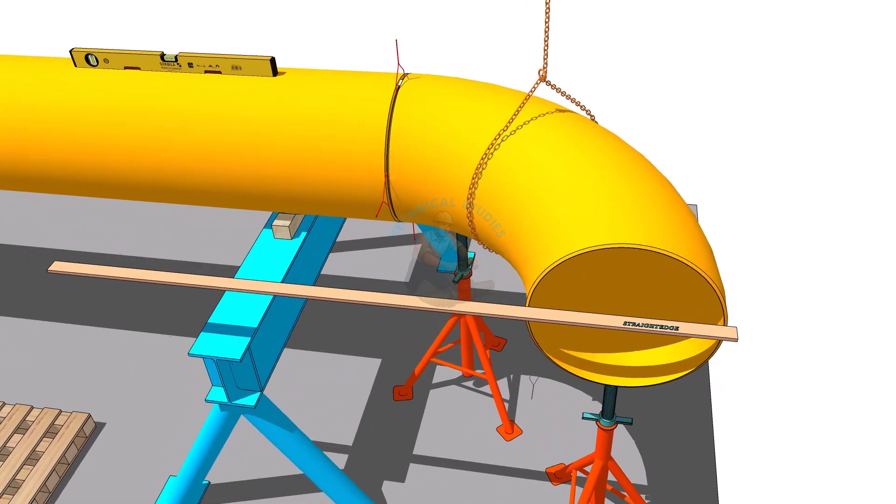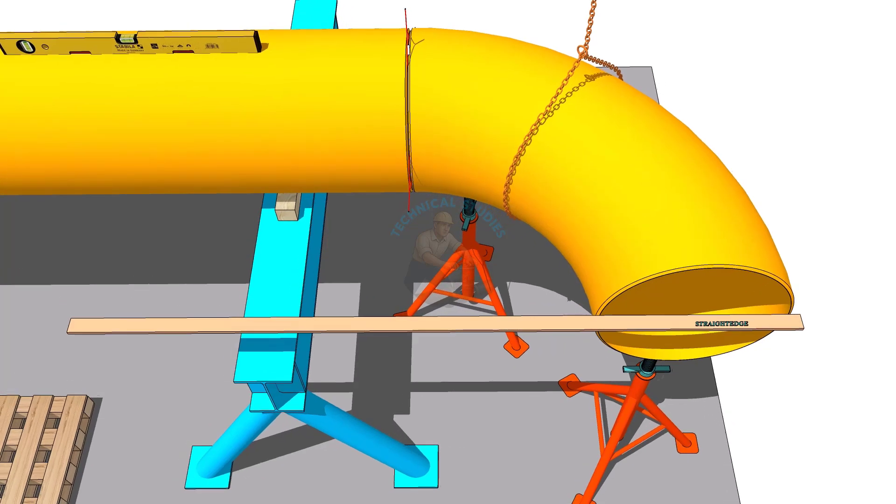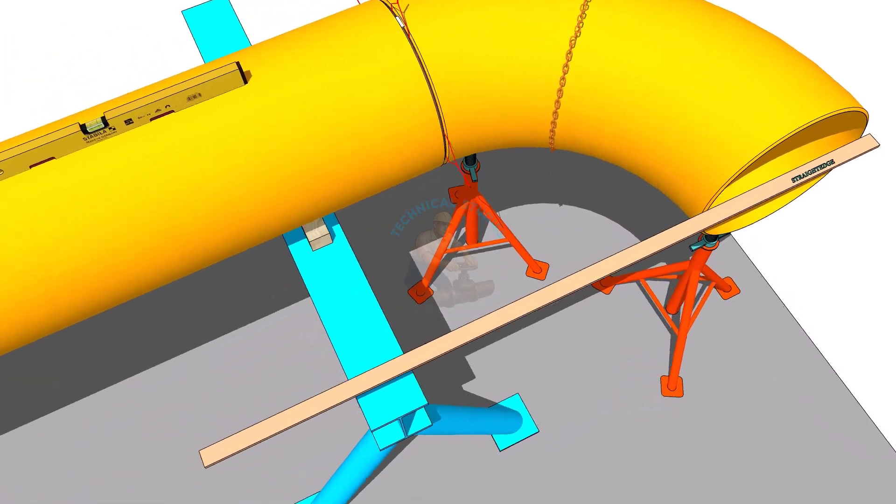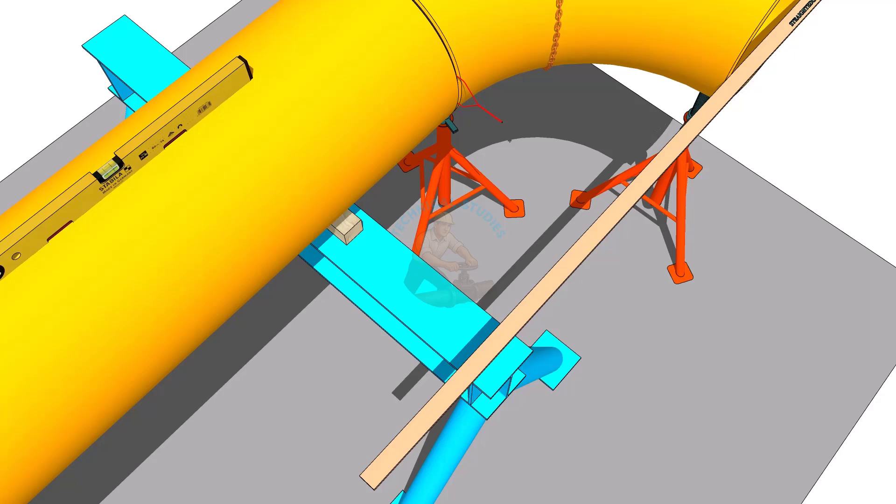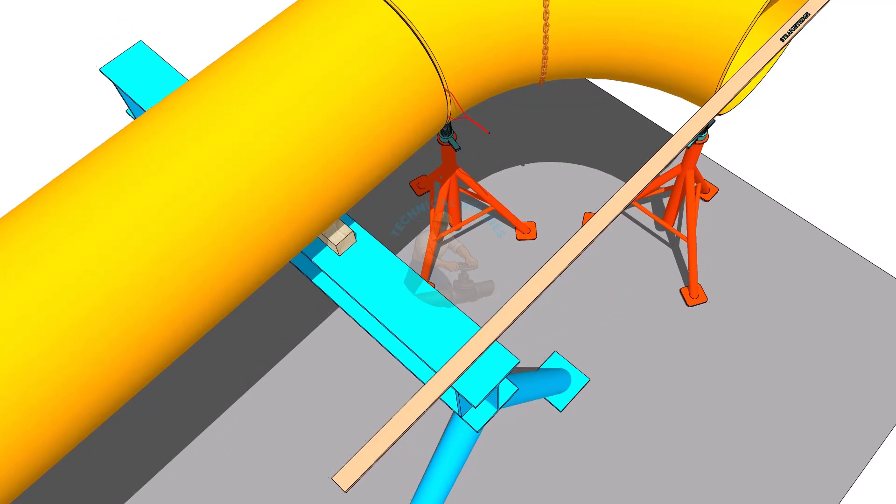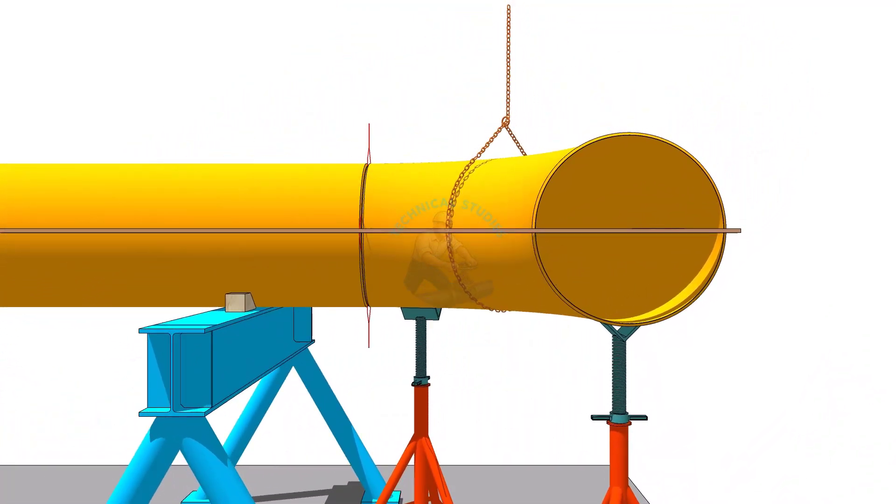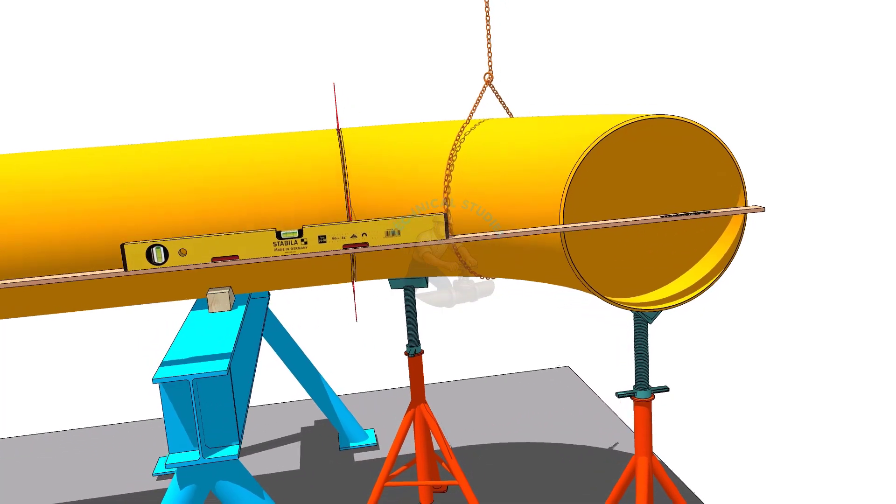Next, place a straight edge or an aluminum box on the face of the elbow. Make sure the straight edge is centered on the elbow and in a level position.